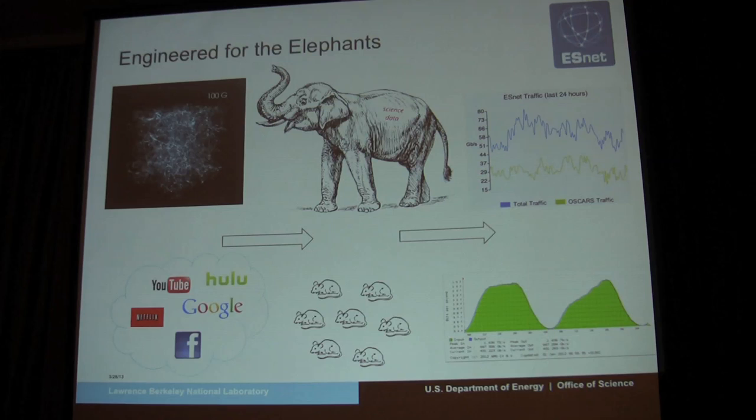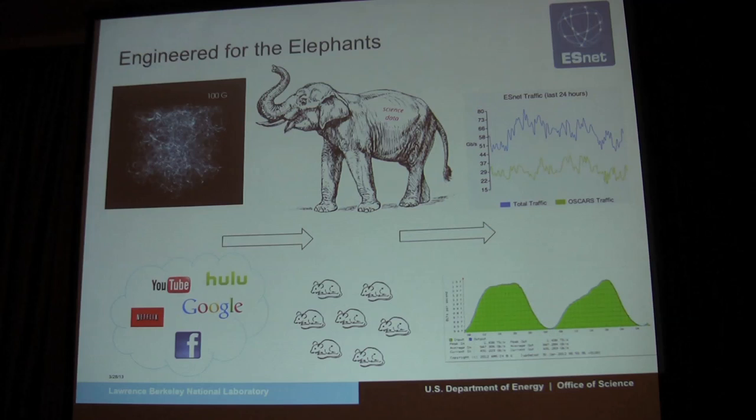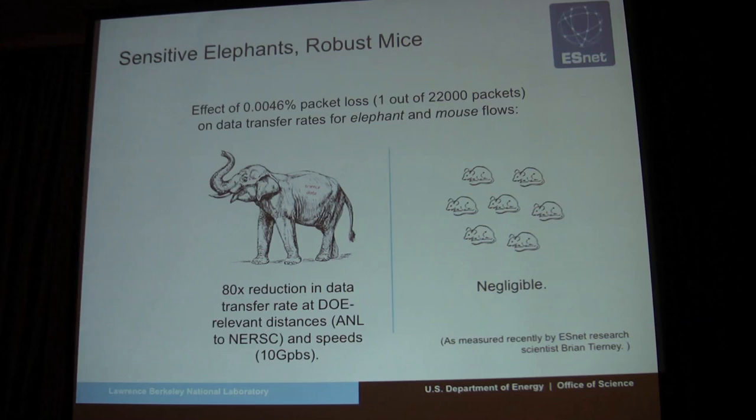These elephant flows result in a really different kind of aggregation pattern. At the core of the research Internet, not only is it very bumpy, but the amount of data the research Internet is carrying at any one time might go up by 50 or 60 percent because a single scientist sets off a data flow that moves transcontinentally. So we engineer quite differently for our portion of the Internet that supports DOE science missions.